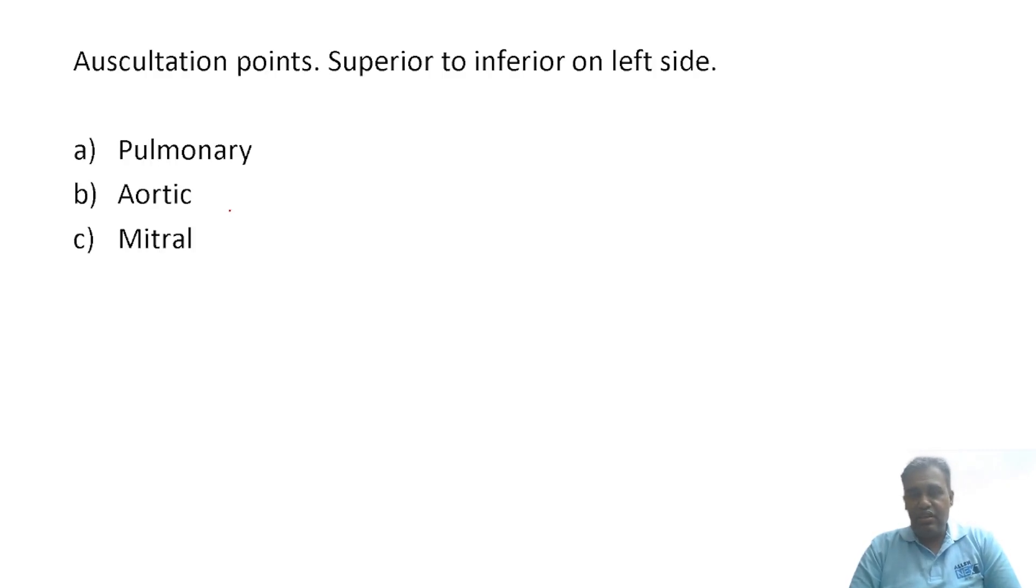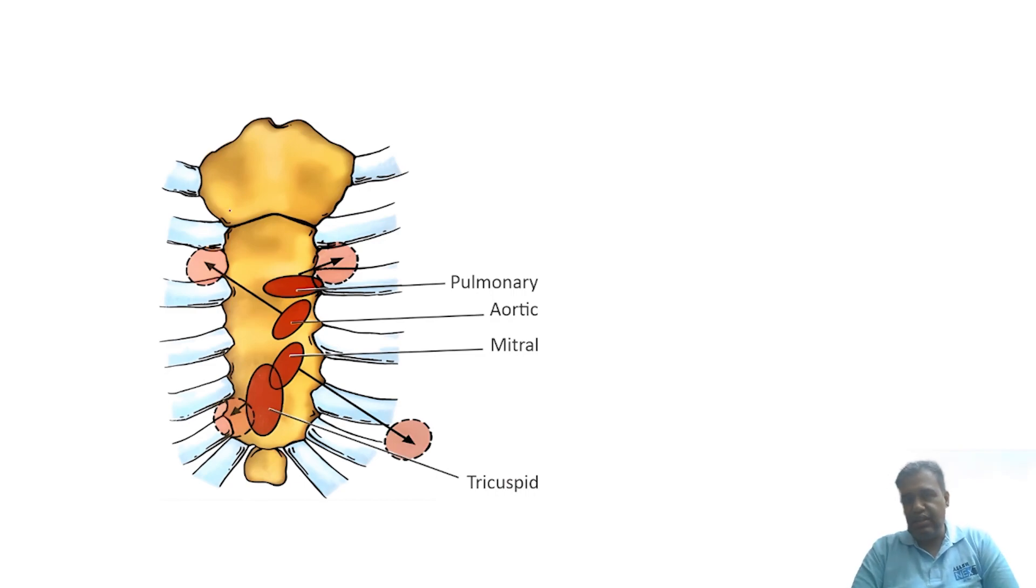Here we have a question - some input came about the auscultatory point, superior to inferior on the left side. I'm not sure about the other options. Here is an image. This is for the sternum and costal cartilage, and this dark red color - these are the actual locations, the surface markings of the valves. This is the pulmonary valve, below you have the aortic valve, then you have the mitral valve, and then you have the tricuspid valve. The surface marking of valves is just behind the sternum.